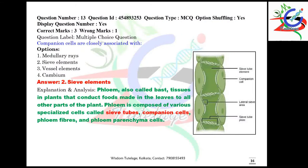Question number thirteen: companion cells are closely associated with what? Companion cells are part of the phloem — sieve elements are adjacent to the companion cells, as shown in the diagram.